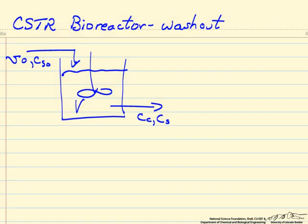Consider a CSTR that's used to grow cells. We're interested in the case where the volumetric flow rate is high enough that we flush all the cells out of the reactor. We're going to use something called a dilution rate, which uses the symbol D. It's the volumetric flow rate divided by the volume of the reactor, which is the same as 1 over the space time.